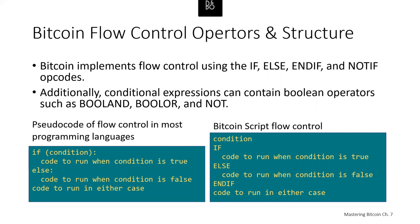Bitcoin flow control scripts can be confusing because Bitcoin script is a stack language. The same way that 1+1 looks backward expressed as '1 1 ADD', flow control clauses in Bitcoin also look backward. In traditional procedural flow control you write: IF (condition) { code to run } ELSE { code to run if false }. In Bitcoin script you write: <condition> IF <code when true> ELSE <code when false> ENDIF, then continue with code to run in either case. When reading Bitcoin script, remember that the condition to be evaluated comes before the IF statement.